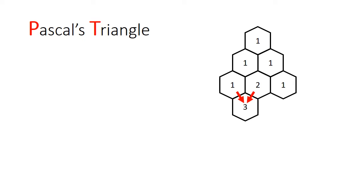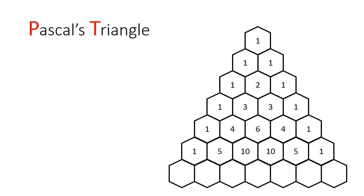Pascal's Triangle is a number pattern where each term is the sum of the two terms above it. For example, 1 plus 2 equals 3. Using this algorithm, here are the first 6 rows.